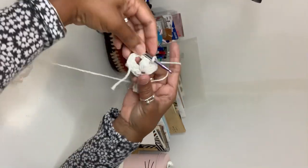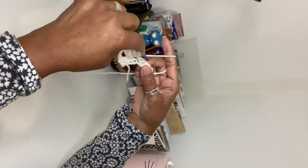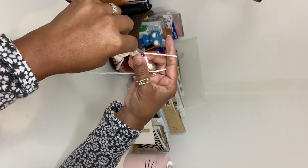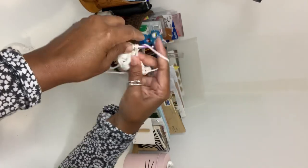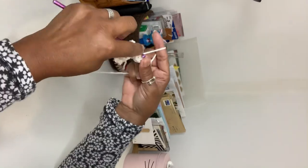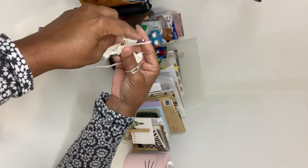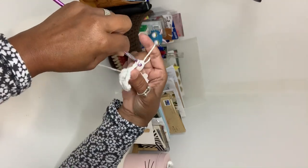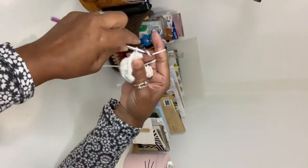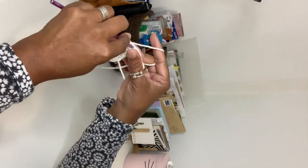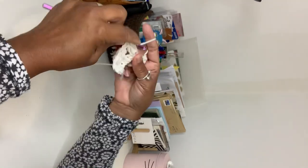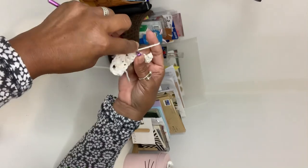Then you skip one, two, three again, and in the fourth one you go one, two, three, four, and you come off through all of them. Close with one chain, and you skip one, two, three.